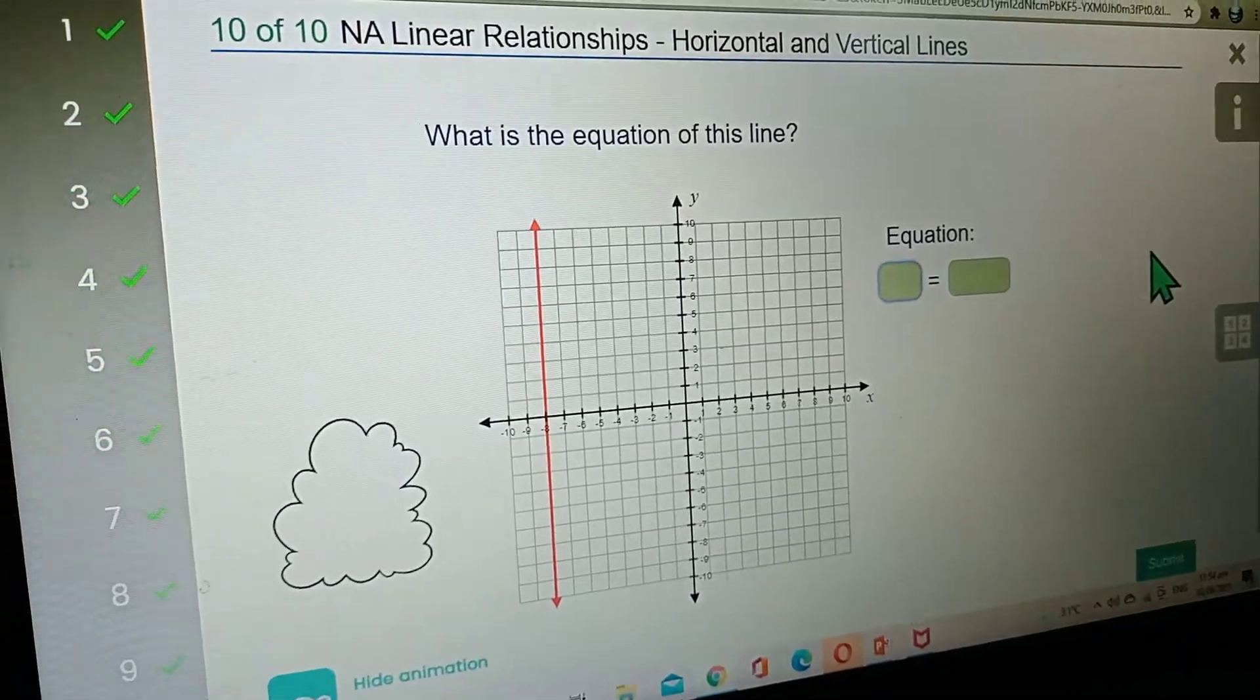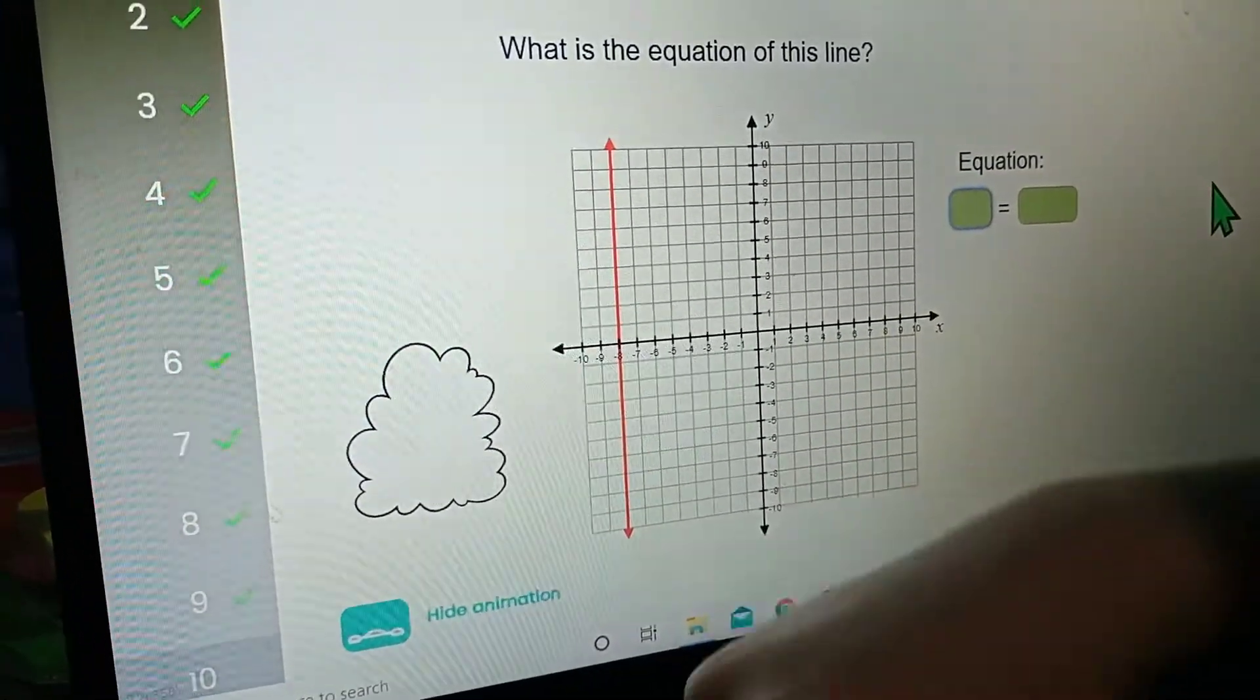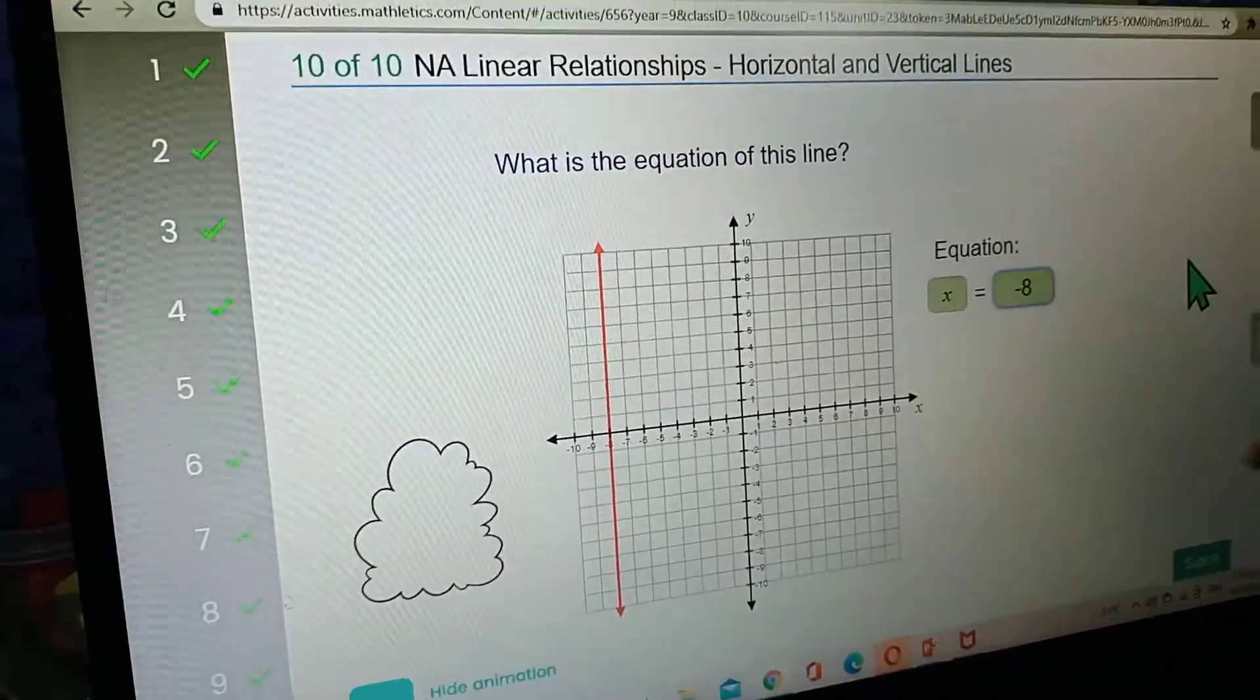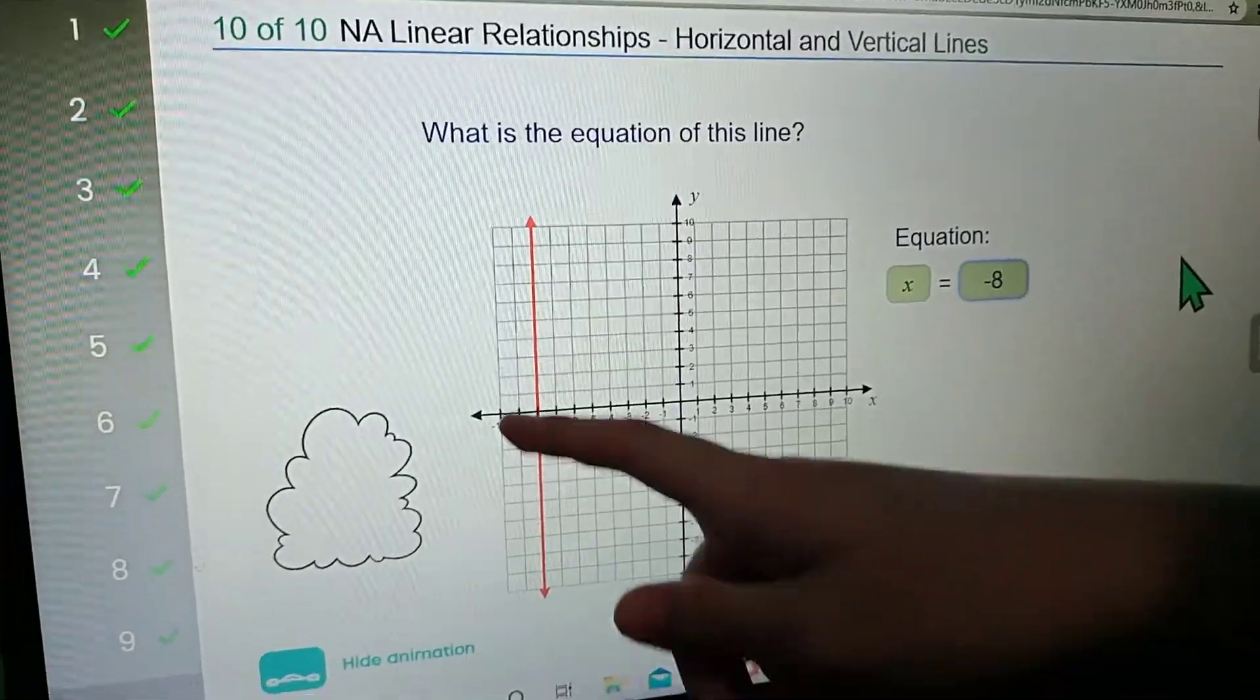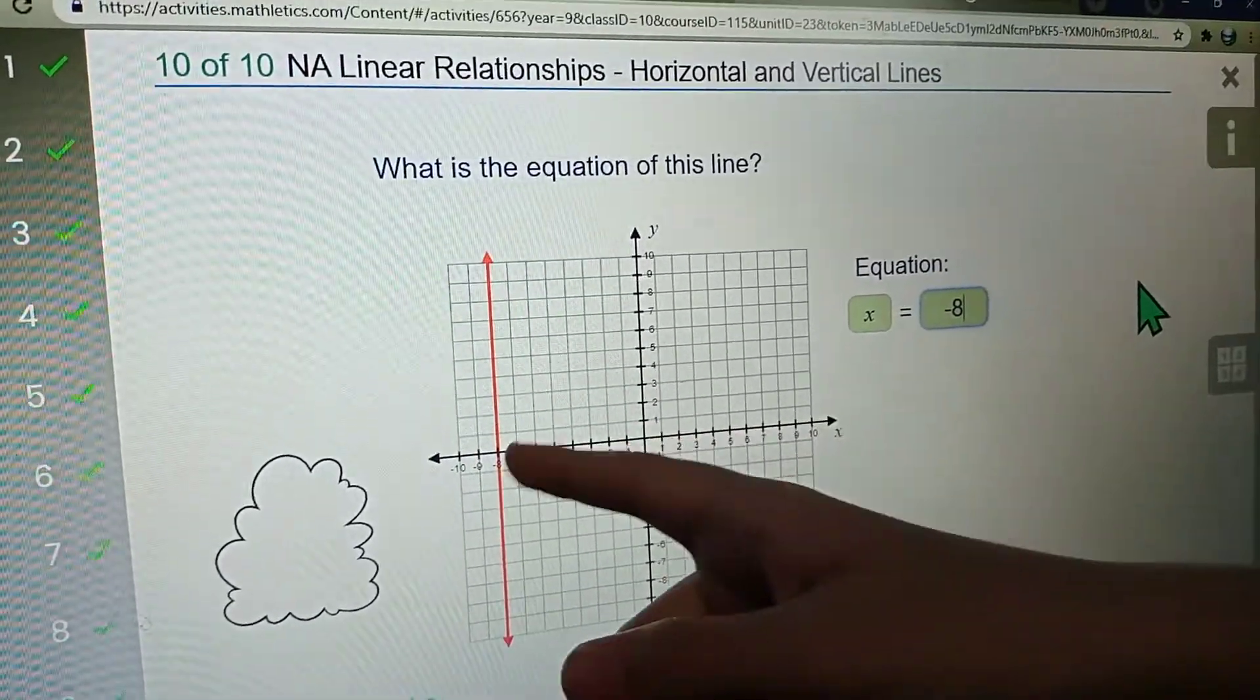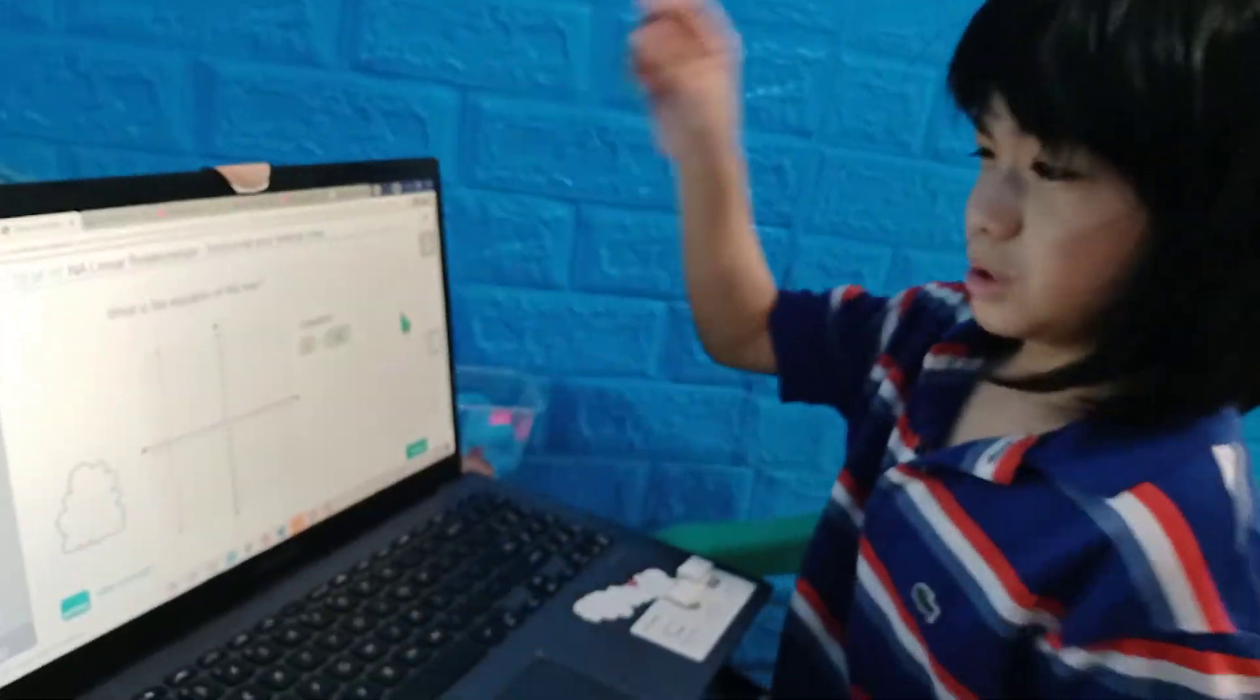So here, the equation of this line is, of course, x equals negative 8. X equals negative 8, so right here it's on the negative 8. This is x because it just goes here on the x axis, but x actually goes on the y axis because it's switched.